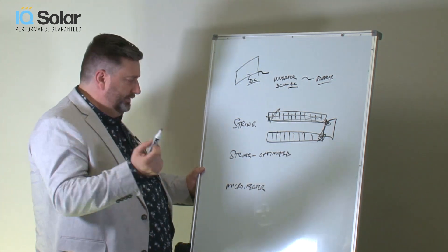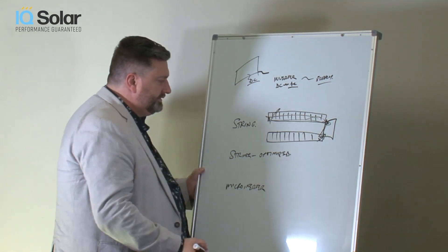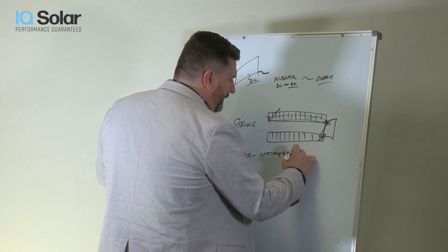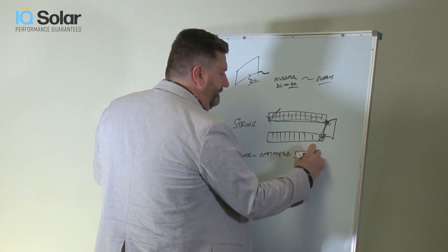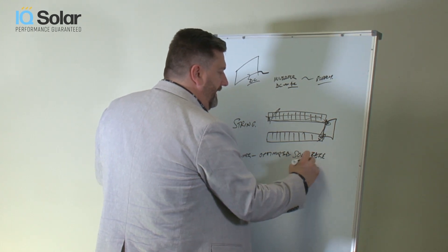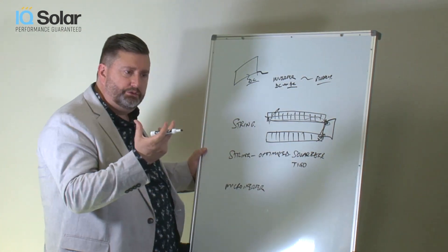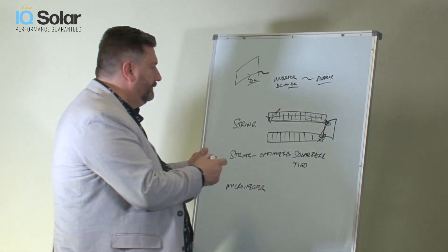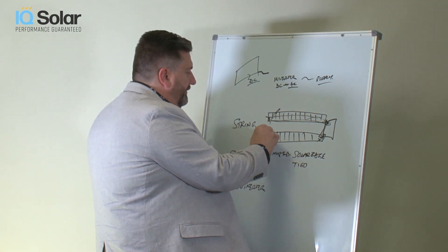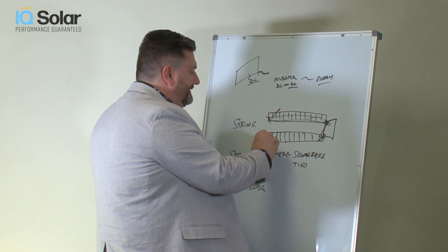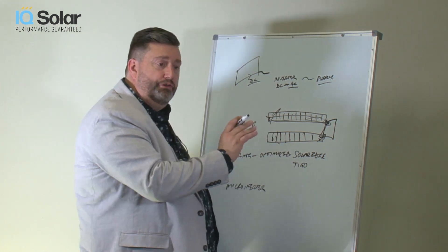The next option is what are called optimizers. There's two systems that are popular. One is called SolarEdge. And there's another called Tigo. So what these do, it's an electrical device on the back of each panel, which means that these panels become somewhat electrically independent of each other.